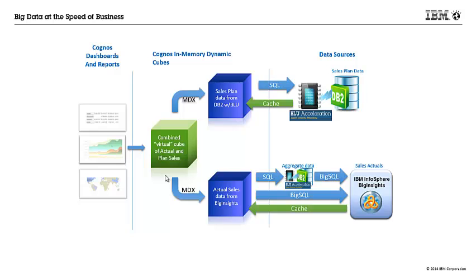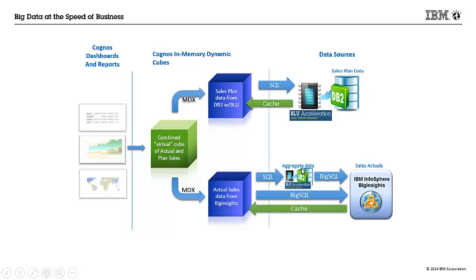This is a diagram of what we will be demonstrating today. On the back end, we have two data sources. In the upper right, we have sales plan data in a DB2 database with Blue Acceleration. Below, we have an IBM Infosphere Big Insights instance, which combines the power of Hadoop with enterprise-grade features. There's also a set of aggregate data in DB2 Blue Acceleration for speed of analysis, which sits on top of Big Insights.